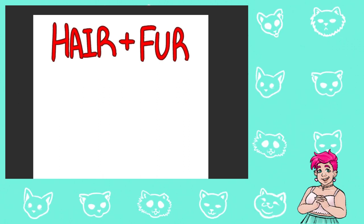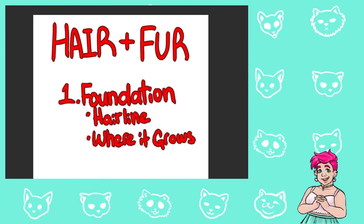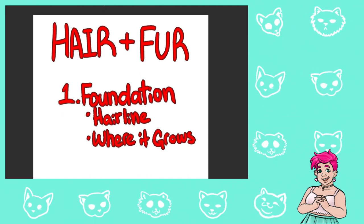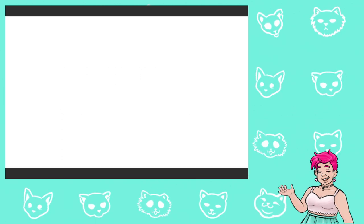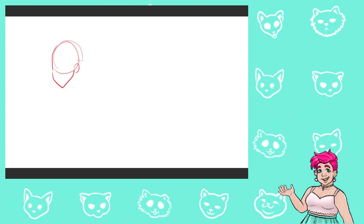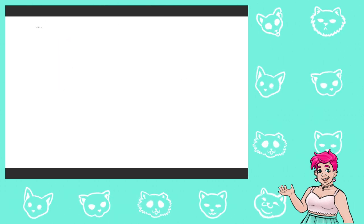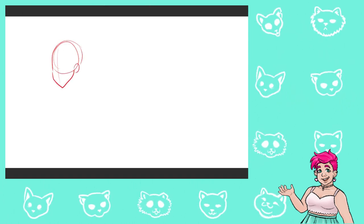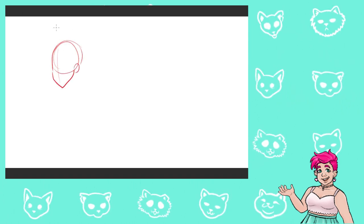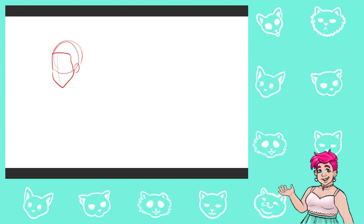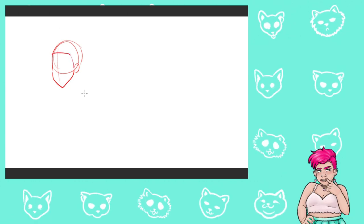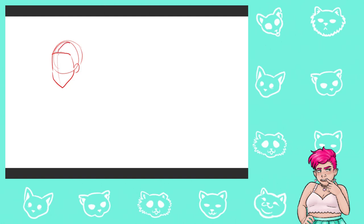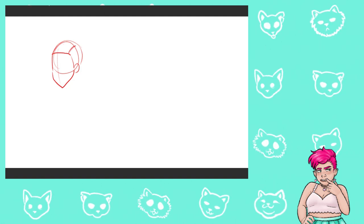To start off, let's talk about the foundation. This includes the hairline and where hair and fur grows. A hairline is where the hair on your head and your forehead meet — the place where your hair starts or stops growing. When drawing people, it's important to determine where the hairline is so you don't accidentally make your character look like they have a receding hairline or some other form of hair loss.